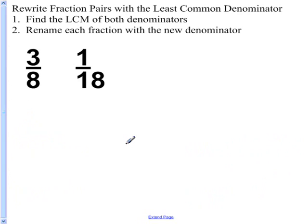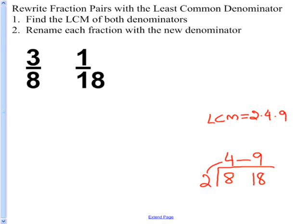I want to rewrite these fractions with the least common denominator. My fractions are 3/8 and 1/18. I want to first find the least common multiple of 8 and 18. 2 will go into both of these. 2 goes into 8 4 times. 2 goes into 18 9 times. If I look at 4 and 9, I can see that there are no common factors, except for 1, between 4 and 9. So I can stop right here and multiply these three numbers together to get my LCM. My LCM is 2 times 4 times 9. 2 times 4 is 8 times 9 is 72. So the least common multiple of 8 and 18 is 72.